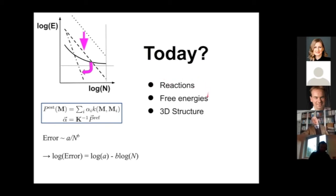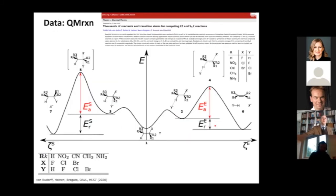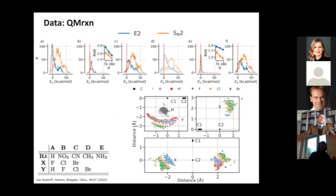I will probably just briefly touch on them due to time. I'd like to tell you we've tackled reactions, we've tackled free energies, and we've tackled the prediction of 3D structure, always using this kind of QML approach. For reactions, we created a dataset called QMreaction, which was published last year. Starting with the same scaffold, we did an SN2 and an E2 reaction.